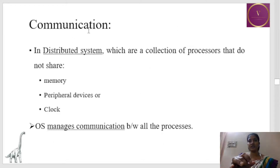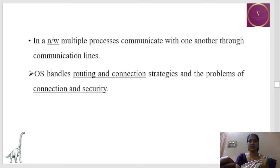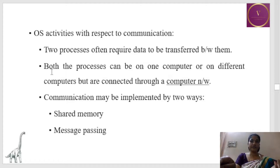Another OS service is communication. When systems are in a distributed system, they do not share memory, peripheral devices, or the clock, and the OS manages communication between them. In a network, processors communicate with one another through communication lines, and the OS handles routing, connection, and security between processes. Communication between two processes — which can be on one computer or on different computers connected through a network — is implemented in two ways: either by using shared memory or message passing.